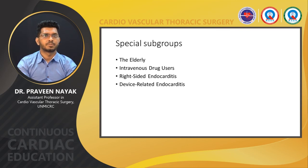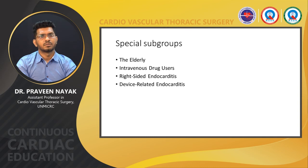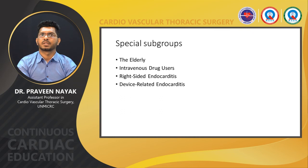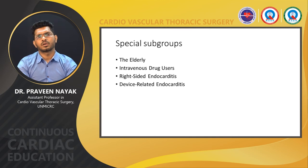Surgical options in right-sided endocarditis include debridement of the infected area, vegetation excision with either valve preservation or valve repair, and excision of the tricuspid valve with prosthetic valve replacement. Tricuspid valvectomy without a prosthesis has been advocated in extreme cases but may be associated with severe post-operative right-sided failure, particularly in patients with pulmonary hypertension as a result of multiple pulmonary emboli. Preservation of the native pulmonary valve is recommended whenever possible, and use of homograft or xenograft is preferred if replacement is required.